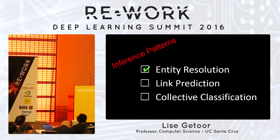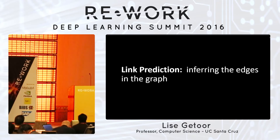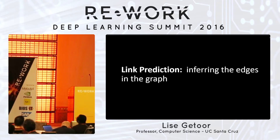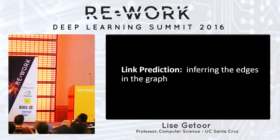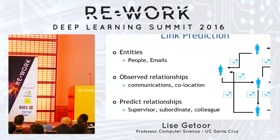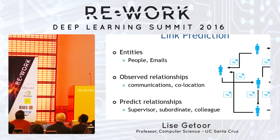The next problem is link prediction — now that you have the nodes, infer the links. This is a lot like recommendation, so I'm going to try to predict the link between a user and an item. A slightly more complex case is where the input is a communication graph with links between individuals, but what we're trying to output is a different kind of semantic link — who works for who, whose colleagues, and so on. So you can have one kind of link that's observed and another kind you're trying to predict, or potentially you're trying to predict the missing links that have not been observed.